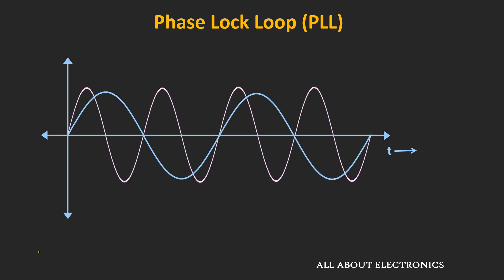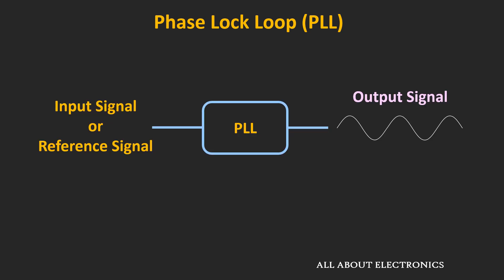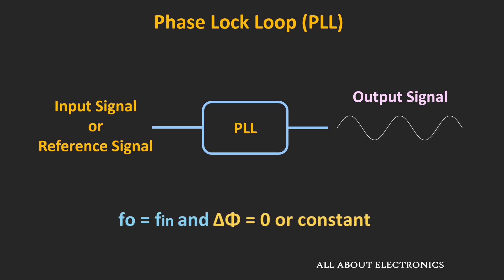In this second figure, the two waveforms start at the same time but they are of different frequency, so in this case the phase between the two signals is continuously changing with time. The phase locked loop system synchronizes the output signal with the input signal in both phase and frequency. When the output frequency equals the input frequency and there is no phase difference or a constant phase difference between the two signals, then we say the loop is in the locked condition.